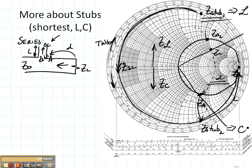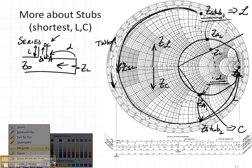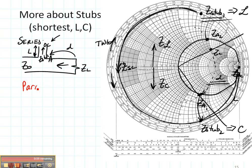Now let's talk about how this would change if instead of having a series stub I had a parallel stub. Well the first thing is that I would have converted ZL to YL and I would have done all of my design that way.